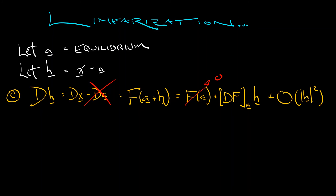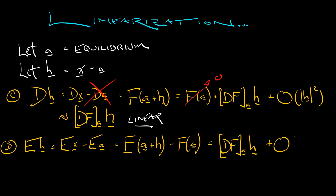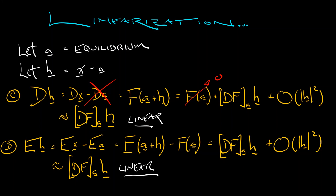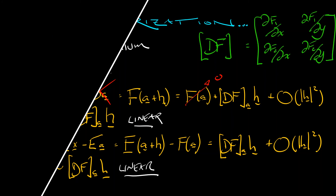If we ignore those higher order terms, we get an approximation: the linearized dynamical system dh equals the derivative of f at a times h. We do the exact same computation in discrete time, writing out the shift of h: e h equals e x minus e a, which equals f of a plus h minus f of a. Since a is an equilibrium, f of a is really a. Taylor expanding f at a plus h, we once again get the linearized dynamical system: e h equals, up to first order, df at a times h. These are two linear systems, and the matrix used is the derivative of f at a, written explicitly in terms of partial derivatives of the right-hand side.